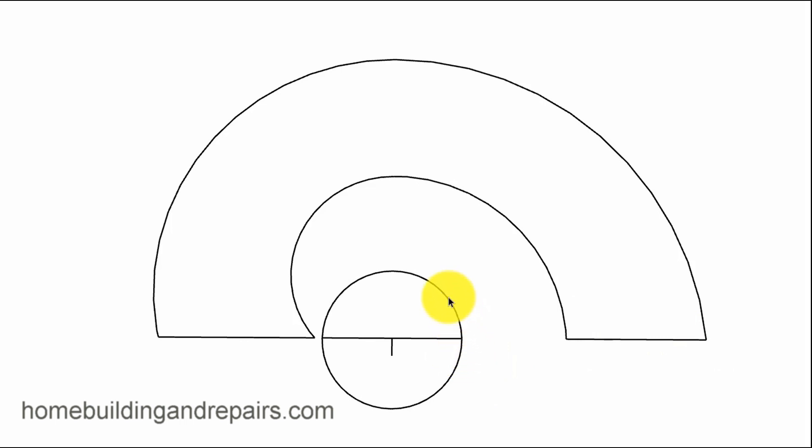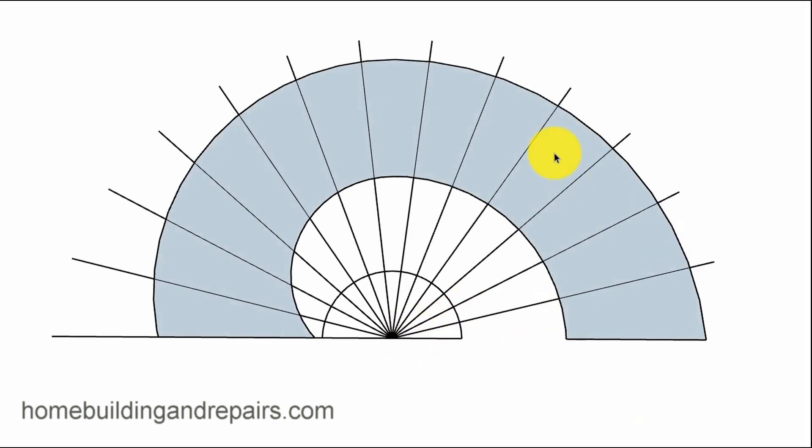The next thing we need to do is draw some type of a circle. We need to be able to divide this into sections. And of course, that would look something like this. Now you can use other methods if you have them. This just works for me. We're just going to extend the lines here. And that would look something like this.